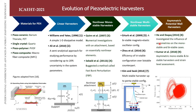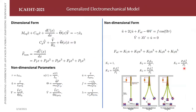After that, bistable, tristable, quad-stable, and even pentastable harvesters have been explored by researchers. During experimentations, many results obtained are asymmetric, so the influence of asymmetries on various potential wells has also been investigated — which is the topic of today's talk. A generalized model is discussed using which both symmetric and asymmetric potential well-based harvesters can be modeled.